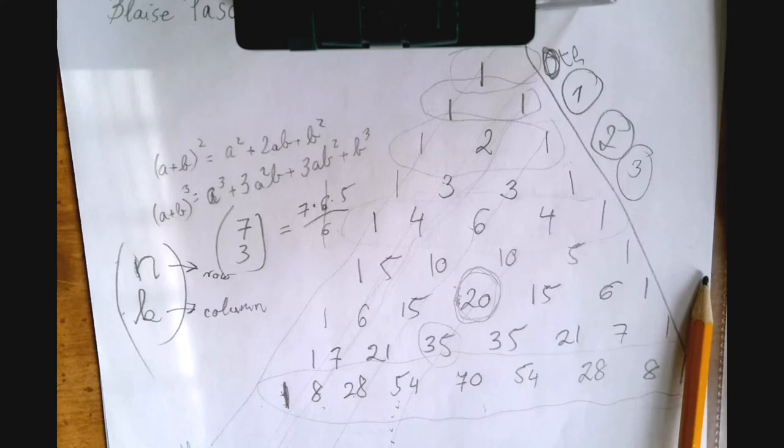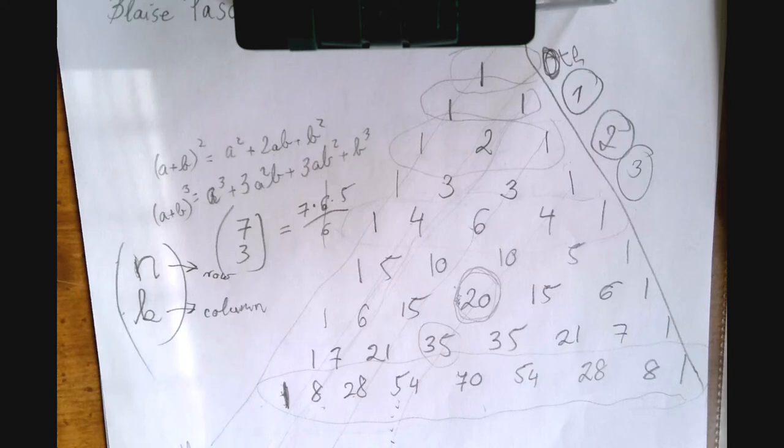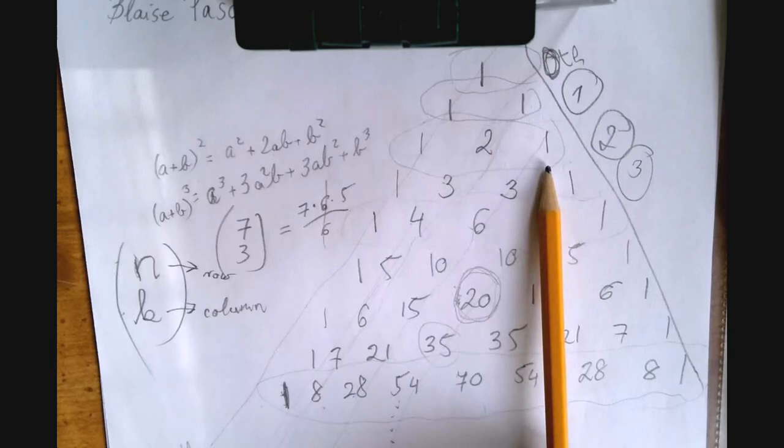Then if you add them, but this time you assign to them alternating signs, so plus, minus, plus, minus. See what happens? 1 minus 1 is 0. 1 minus 2, negative 1, plus 1, 0. 1 minus 3, negative 2, plus 3, minus 1.